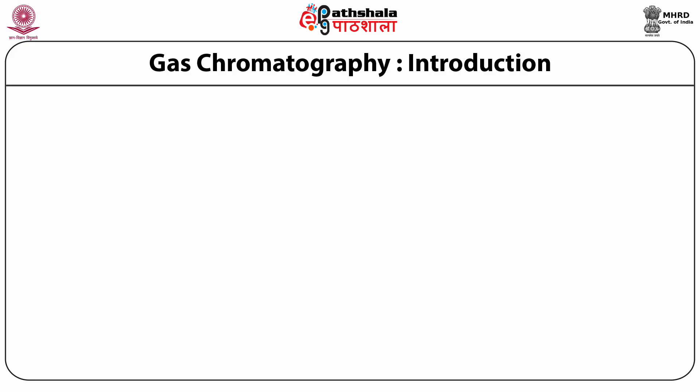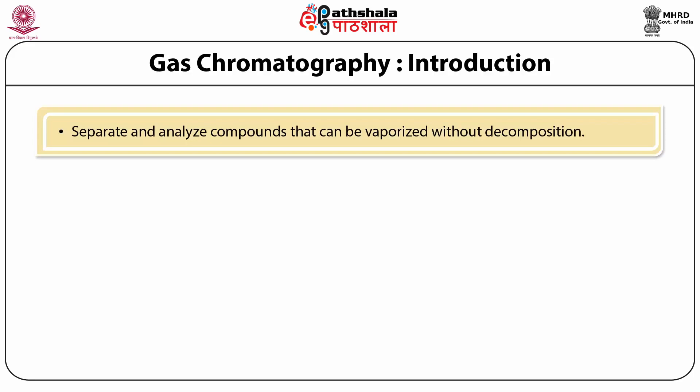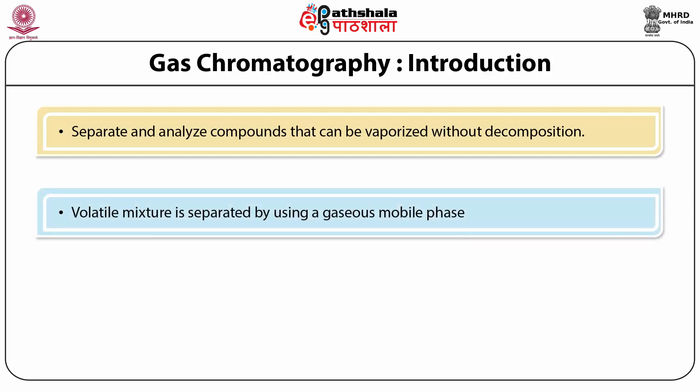Gas chromatography is used to separate and analyze compounds that can be vaporized without decomposition. Here, the volatile mixture is separated by using a gaseous mobile phase. Another term given to gas chromatography is vapor phase chromatography (VPC) or gas liquid partition chromatography (GLPC). Gas chromatography is also sometimes known as gas liquid chromatography, and it is always carried out in a column which is typically packed or capillary.